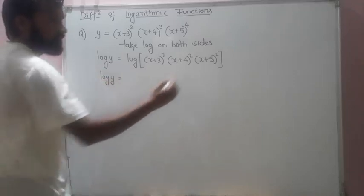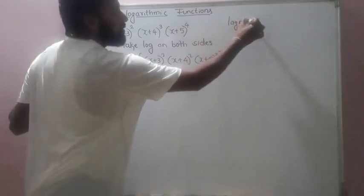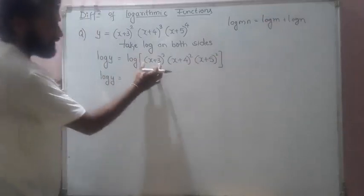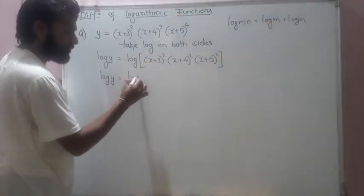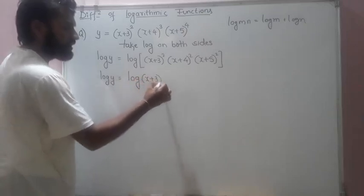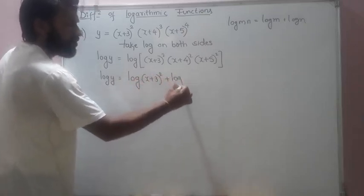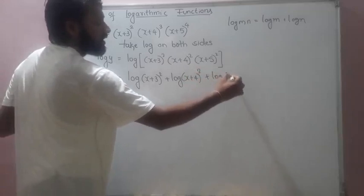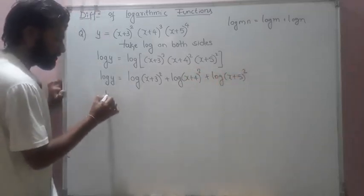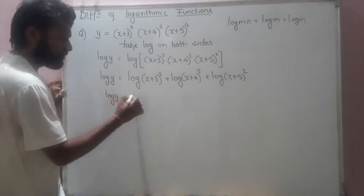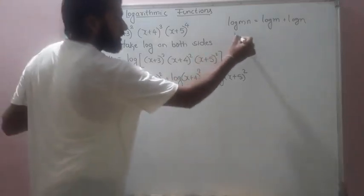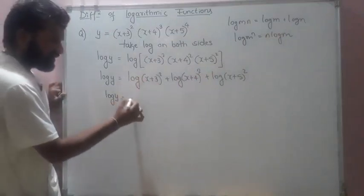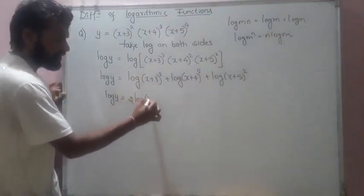The basic rule is log(m × n) = log m + log n. Since I have three functions in a product, they convert to addition. Then applying log(m^n) = n·log m, the powers come down: log y = 2·log(x+3) + 3·log(x+4) + 4·log(x+5).